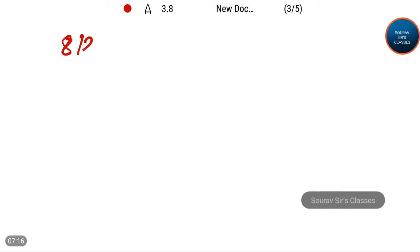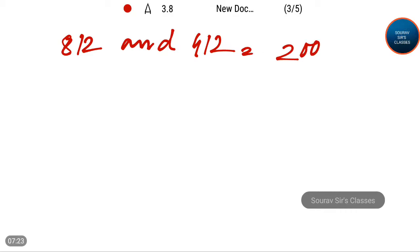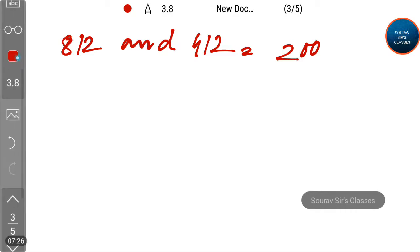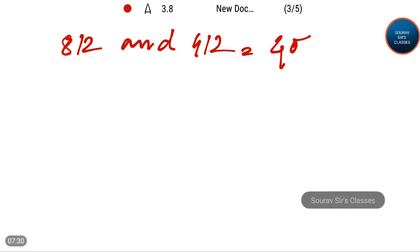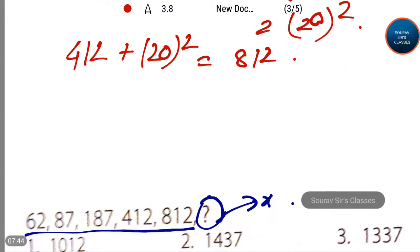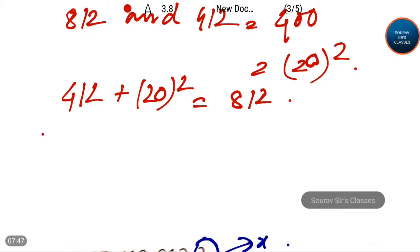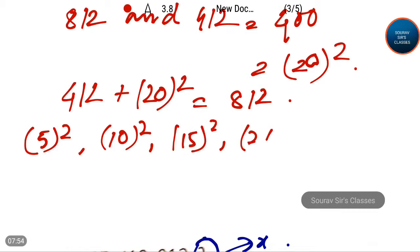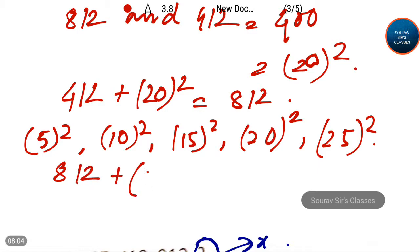The difference between 812 and 412 is equal to 400, which is 20 squared. So 412 plus 20 squared equals 812. The terms are increasing in the pattern of 5 squared, then 10 squared, then 15 squared, then 20 squared. So the next difference must be 25 squared, and the last term must be 812 plus 25 squared.